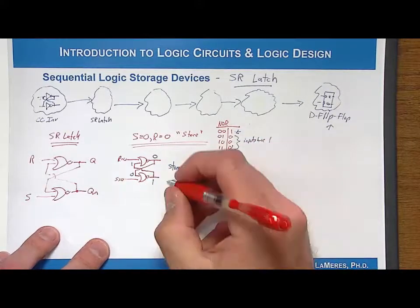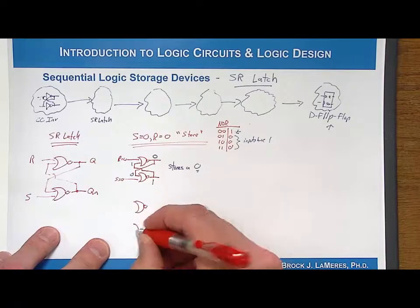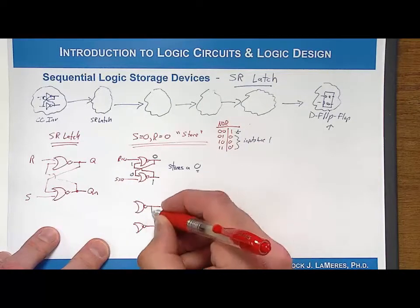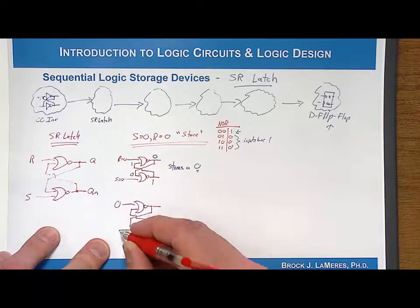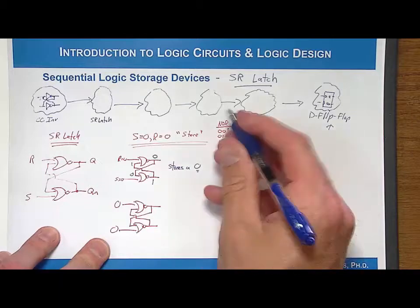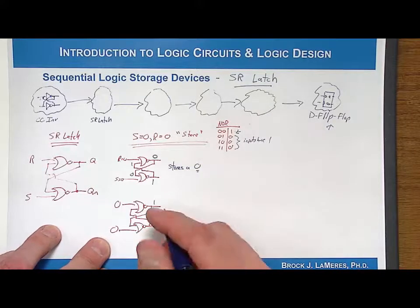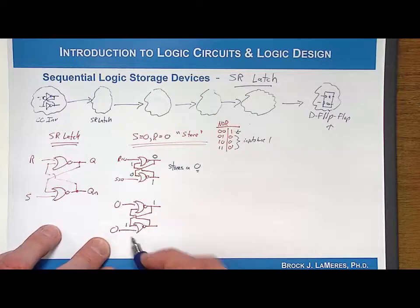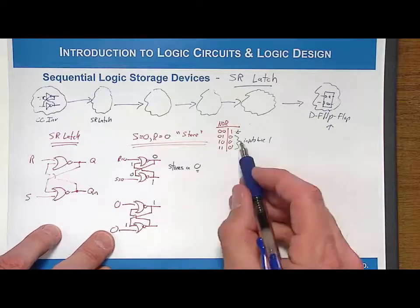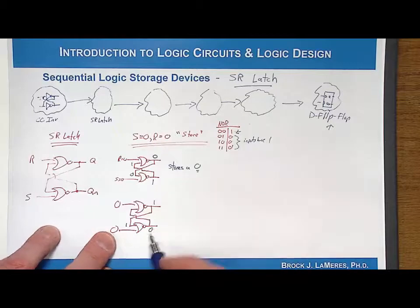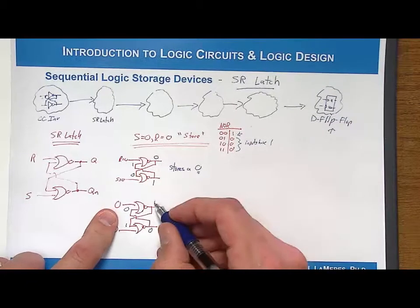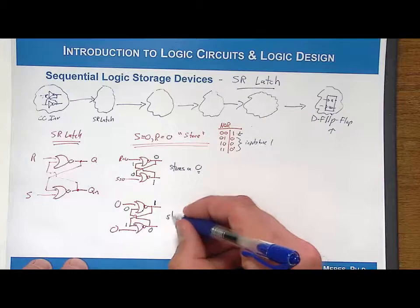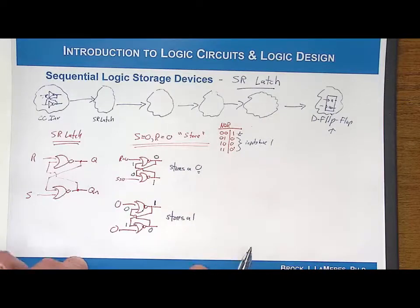Now let's see if it will store a 1. With R equal to 0 and S equal to 0, what if Q starts at 1? That 1 is driven back to the other NOR gate — any 1 on the input of a NOR gate means the output will for sure be 0. Then that 0 is fed back to the first NOR gate, giving inputs of 0 and 0, which drives a 1 and reinforces the 1. This indeed stores a 1.